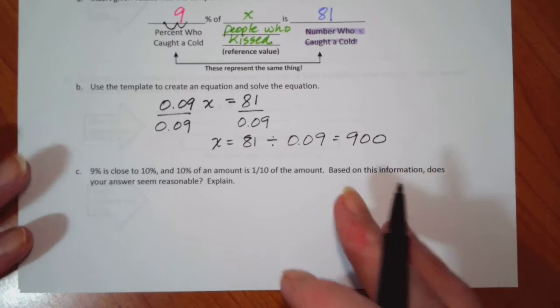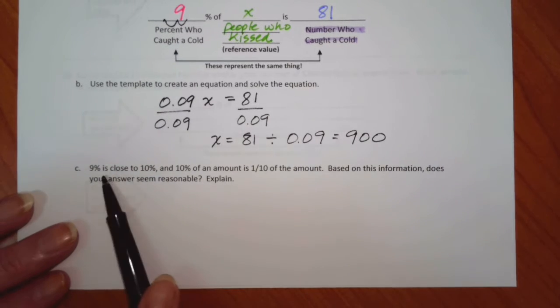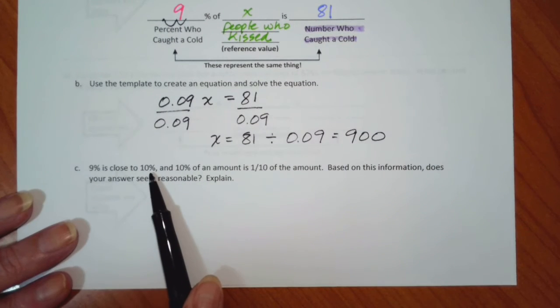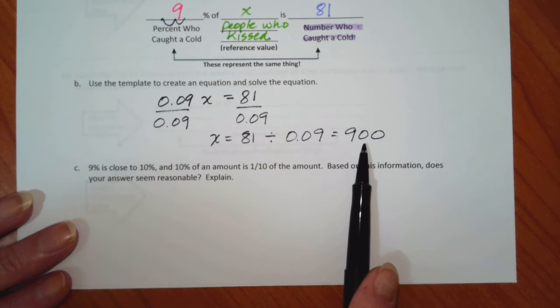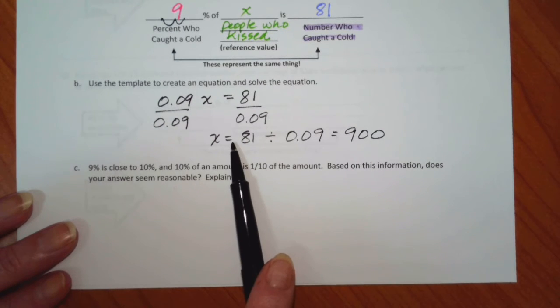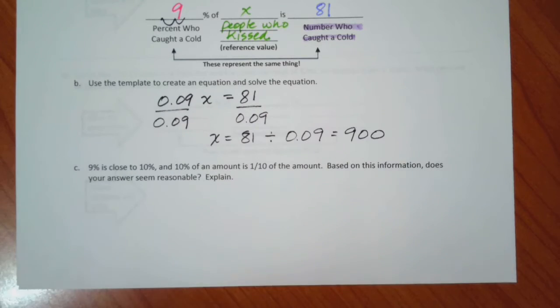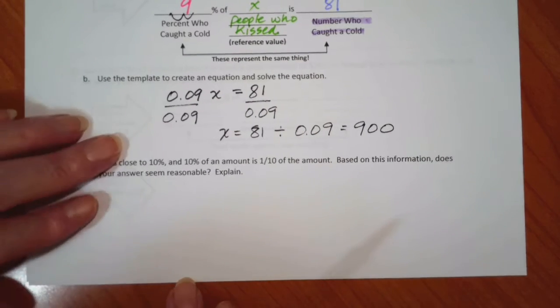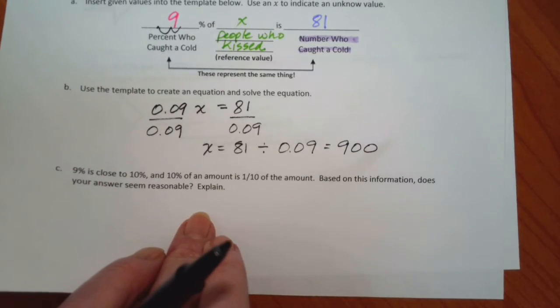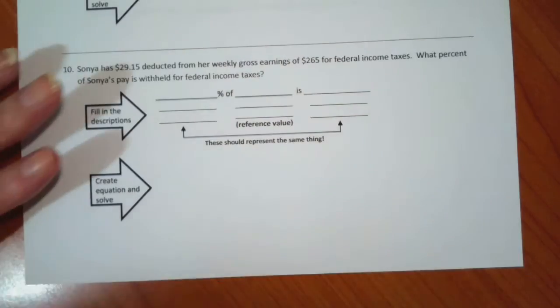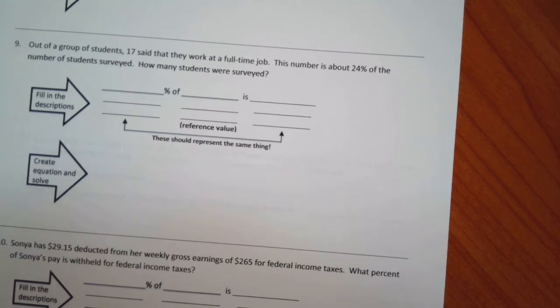Rather than take the time on the videos to write this down, 9% is a little less than 10%. So if I'm starting at this amount, 10% would be 90. 81 is a little less than 90, so 9% is a little bit, so it seems reasonable. And again, that's what we want to look at with these benchmark percents.